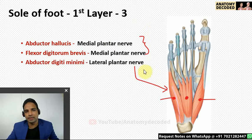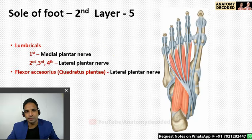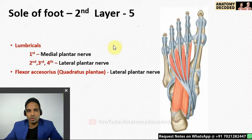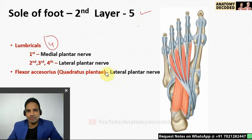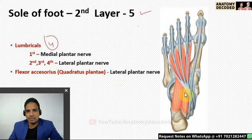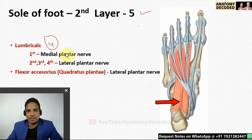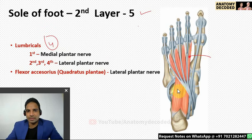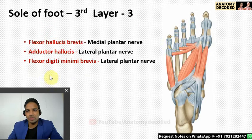In the second layer of the sole there are five muscles: four lumbricals and flexor accessorius (also called quadratus plantae). The lumbricals attach along the tendons of flexor digitorum longus. For nerve supply, only the first lumbrical is supplied by the medial plantar nerve; all remaining muscles — including flexor accessorius and the other three lumbricals — are supplied by the lateral plantar nerve.